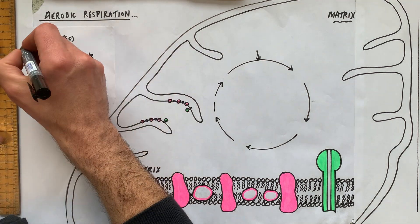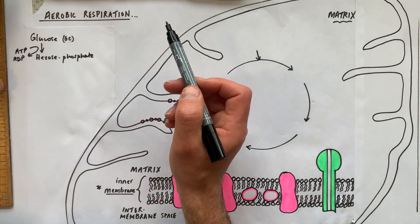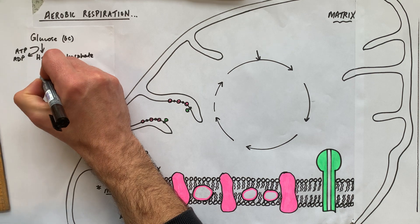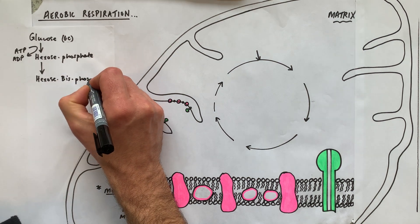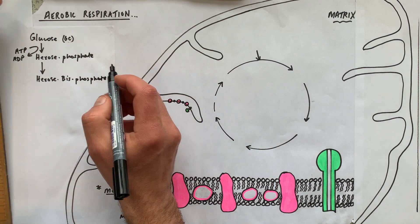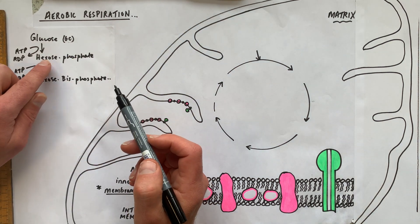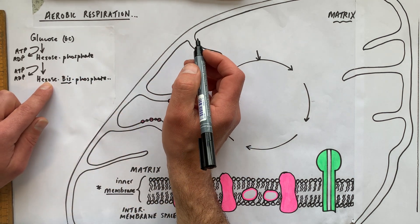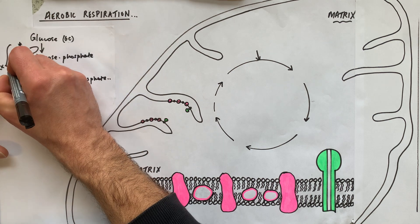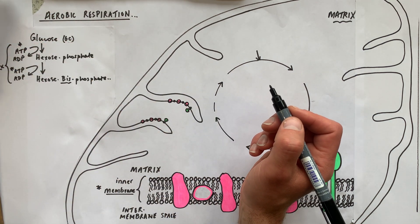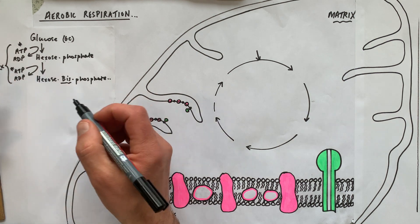Hexose phosphate is still a six-carbon molecule but with an ATP-donated phosphate group added. It is further phosphorylated into hexose bisphosphate — a six-carbon sugar with two phosphate groups. Another ATP is hydrolysed and its phosphate group is added, so in this investment phase we use two ATPs in total to phosphorylate glucose. Hexose bisphosphate is quite unstable in the cytoplasm.